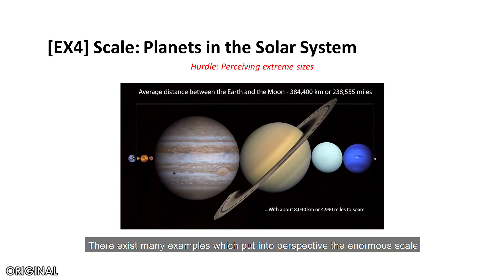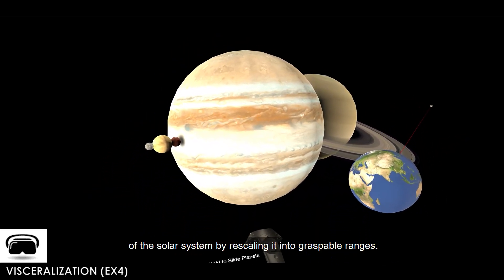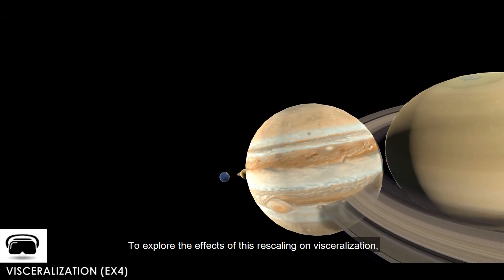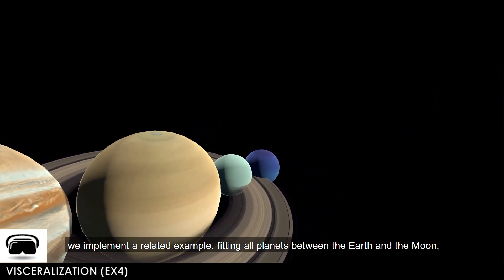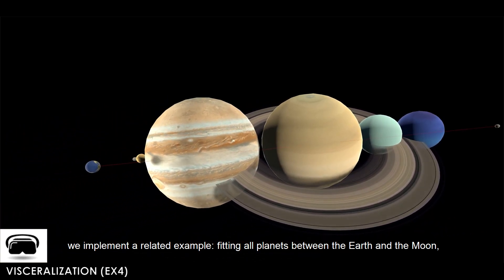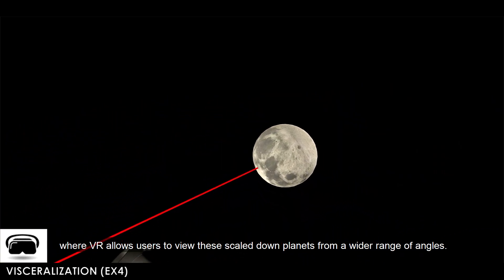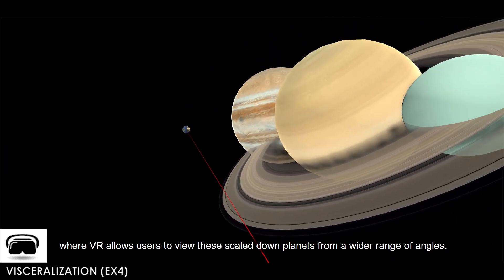There exist many examples which put into perspective the enormous scale of the solar system by rescaling it into graspable ranges. To explore the effects of this rescaling on visceralization, we implement a related example fitting all planets between the Earth and the Moon, where VR allows users to view these scaled-down planets from a wider range of angles.